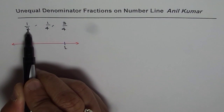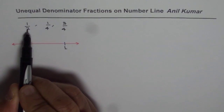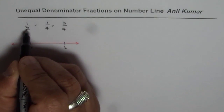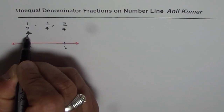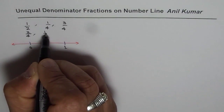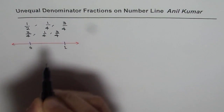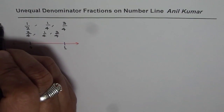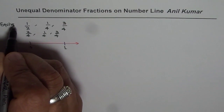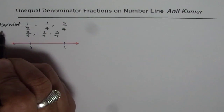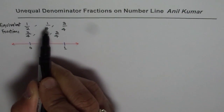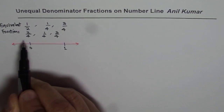If I multiply both numerator and denominator of 1/2 by 2, I could write this half as 2 over 4. And we already have 1 over 4 and 3 over 4. By doing so, we get equivalent fractions. So half, 1 over 4, and 3 over 4 is the same as 2 over 4, 1 over 4, and 3 over 4.